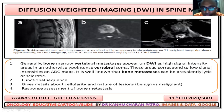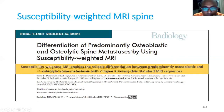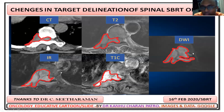Diffusion-weighted sequence for spine: similar to brain, restricted diffusion looks brighter. Susceptibility-weighted MRI for spine is useful to differentiate osteoblastic versus osteolytic lesions. Comparing delineation across sequences: CT, T2, STIR, T1 contrast, and diffusion-weighted image — the volume changes with each sequence. STIR and diffusion-weighted image show the tumor volume most prominently. Always ask for these five sequences to properly delineate the spine.